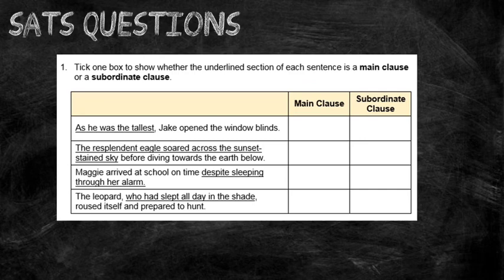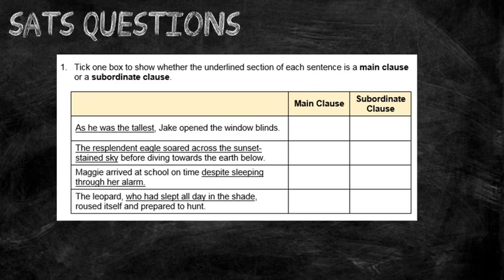In the next one: 'The leopard, who had slept all day in the shade, roused itself and prepared to hunt.' This one is a relative clause. The bit in the middle that has been underlined is still the additional information. If we removed it, the sentence would read 'The leopard roused itself and prepared to hunt,' which makes sense on its own — so that is the main clause. The difference here is that the subordinate clause has been added into the middle of the sentence, rather than at the beginning or end.